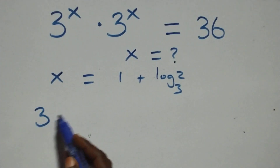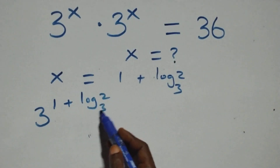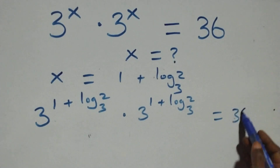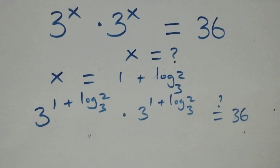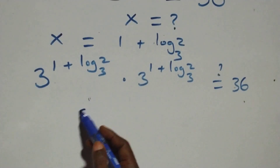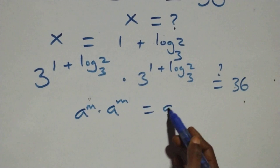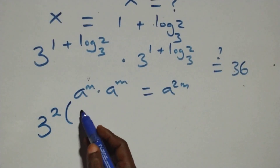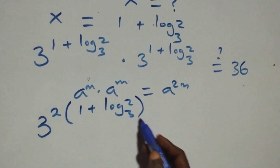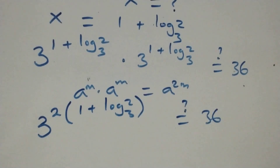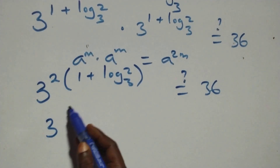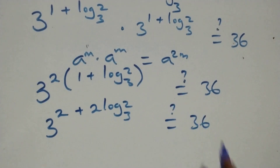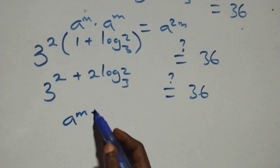That is, what we have here becomes 3 raised to power (1 plus log 2 base 3), times 3 raised to power (1 plus log 2 base 3) — is it equal to 36 on this side? Then from here, using the same-base multiplication rule: when we have a raised to power m times a raised to power m, this is the same thing as a raised to power m plus m, that's 2m. At this here we write this as 3 raised to power 2 times (1 plus log 2 base 3). Is it equal to 36? Then opening this bracket we have 3 raised to power 2 plus 2 log 2 base 3, is it equal to 36?